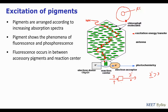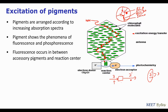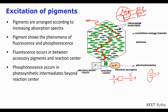Consider a photosynthetic unit where pigments are arranged according to increasing absorption spectra toward the reaction center. Suppose a pigment has an absorption spectra of 500 nm and the next is 550 nm. The first molecule absorbs light and emits it at a greater wavelength, which then falls within the absorption range of the adjoining pigment. This continues, with each molecule emitting at a higher wavelength that is absorbed by the next molecule nearer to the reaction center. This enables one-way channelization of energy from the periphery to the reaction center.